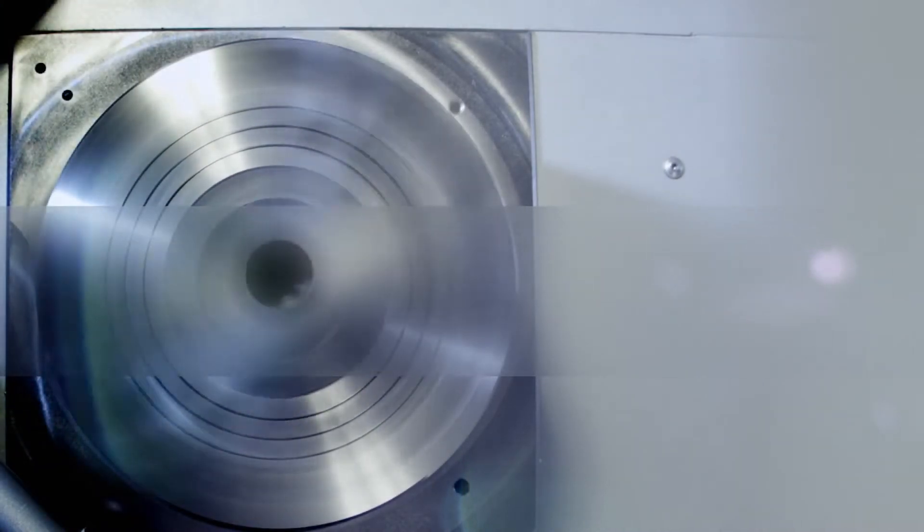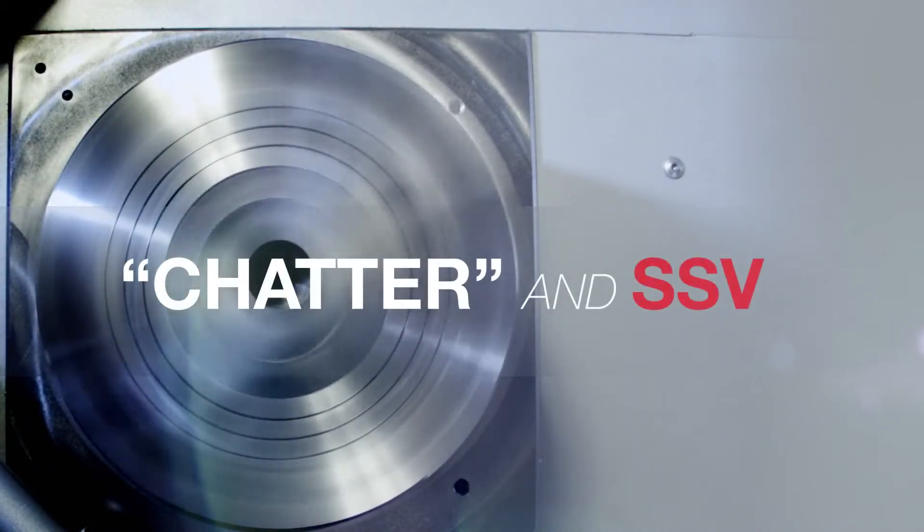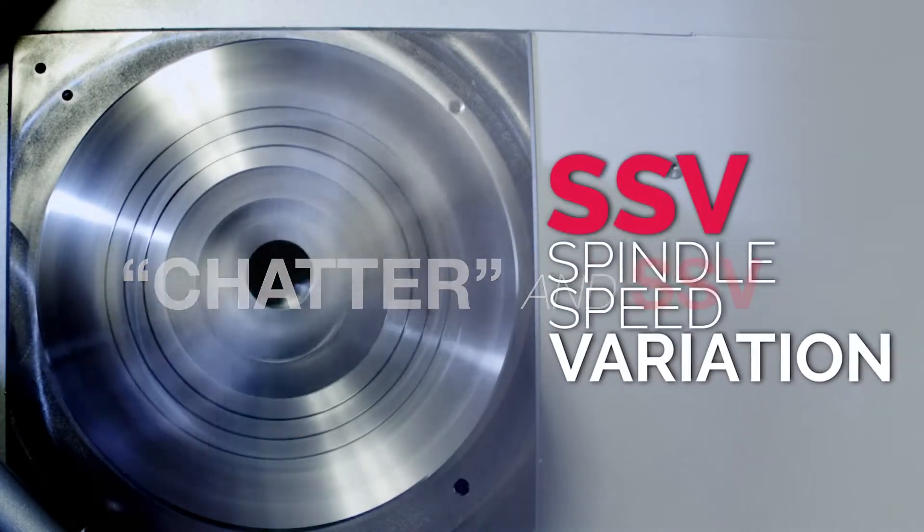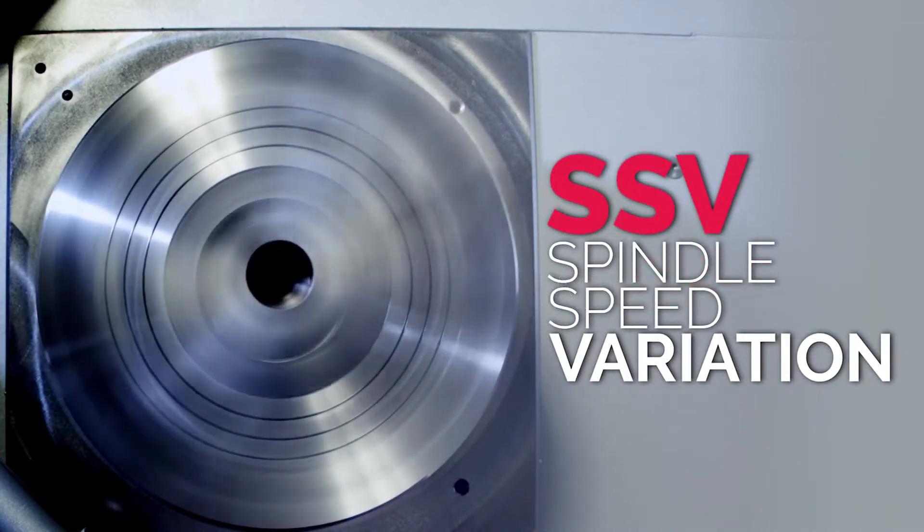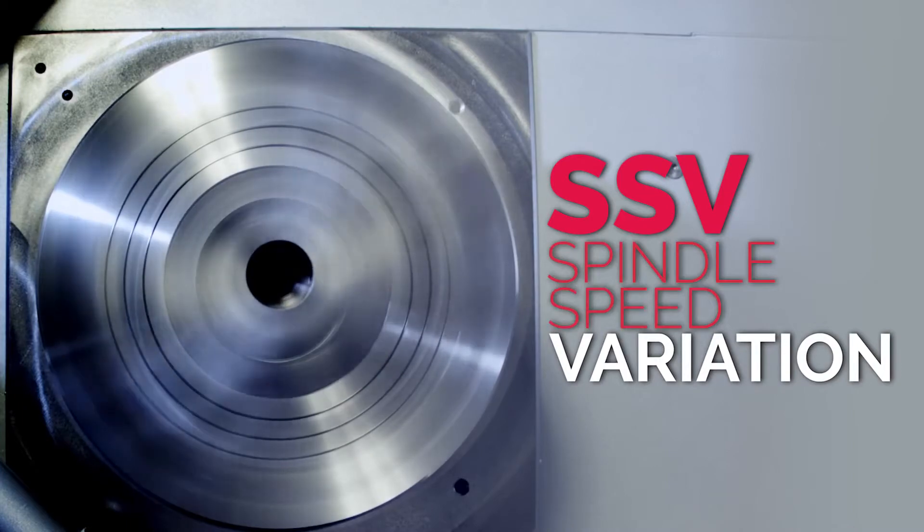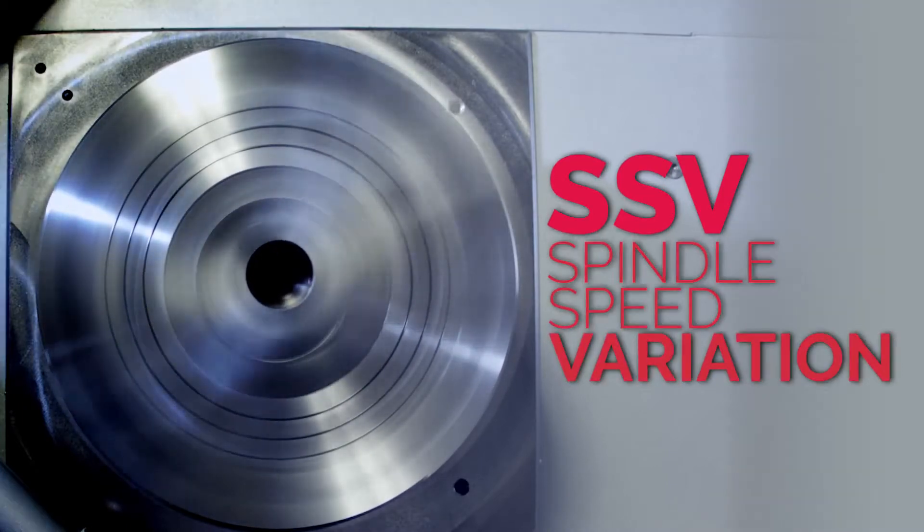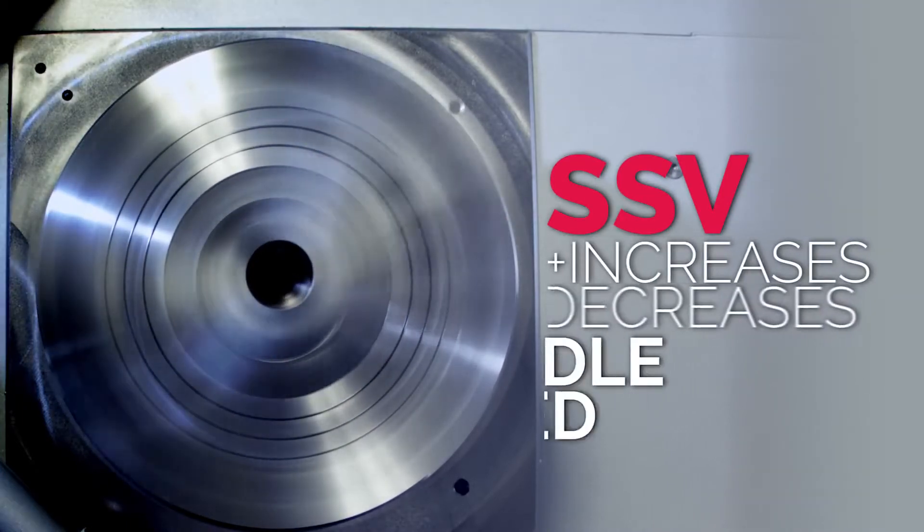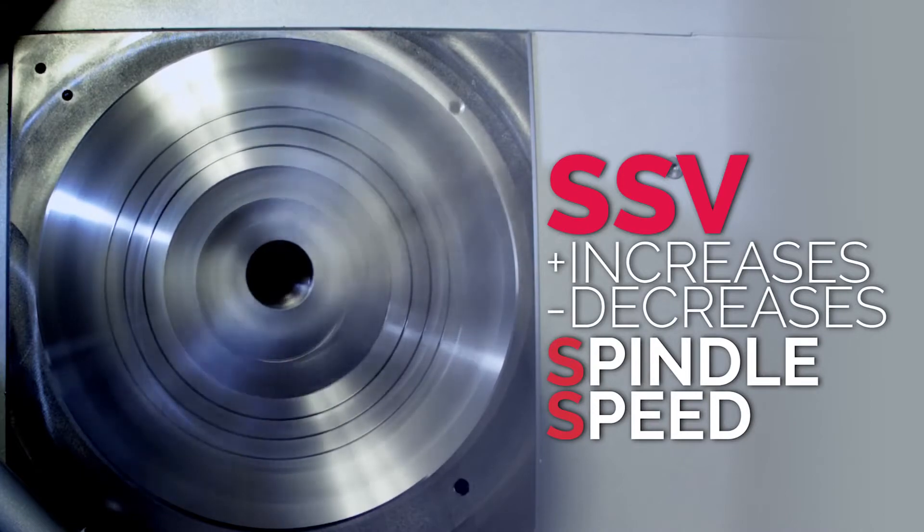There's a great feature available on all Haas lathes that you may not be familiar with. It's called SSV. SSV is short for Spindle Speed Variation, and when it's activated, it increases and decreases spindle speed continuously, which can significantly reduce the effects of chatter.